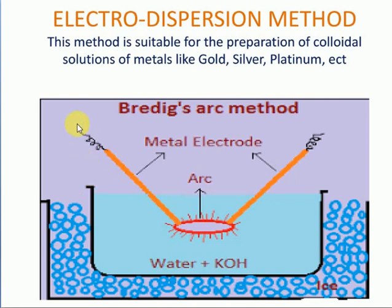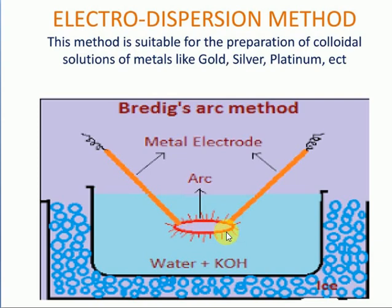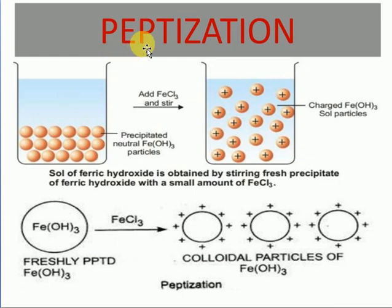To repeat: the instrument has an ice bath, and whatever liquid I want to convert into a colloidal solution is placed there with two electrodes. When electricity is passed, an arc is generated, vapor is produced, and the vapor molecules condense to colloidal size. That is the Bredig's arc method.